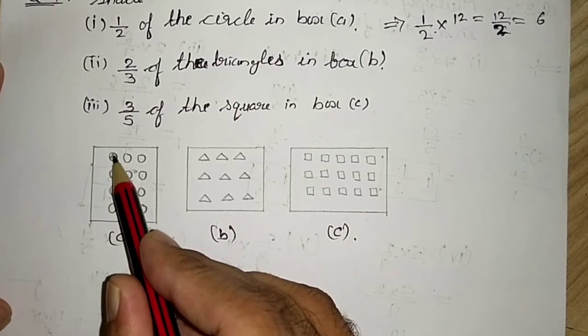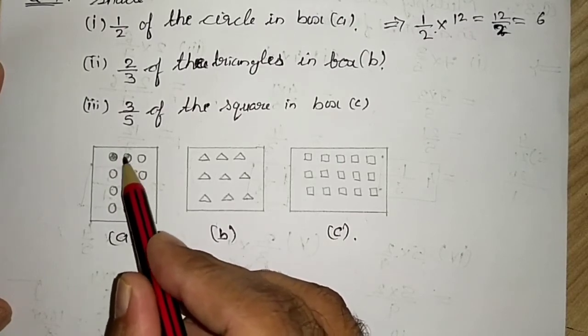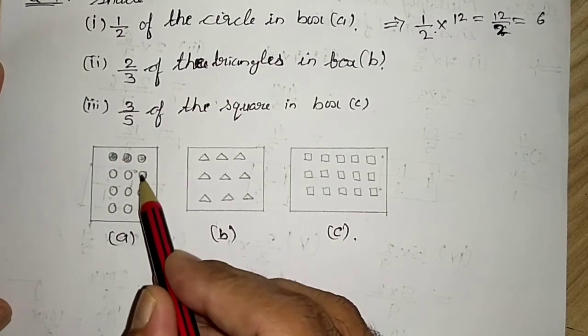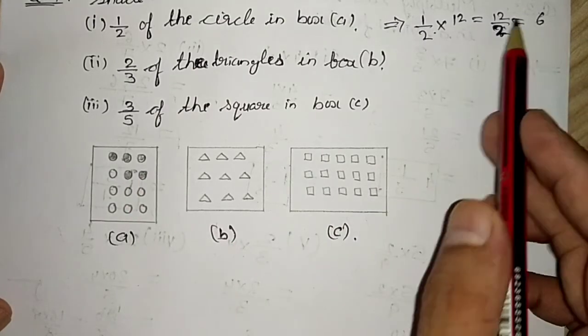This shading you have to do on your own. You have to shade how many circles? Six circles because answer is six.